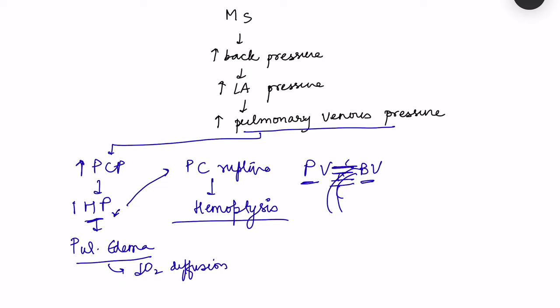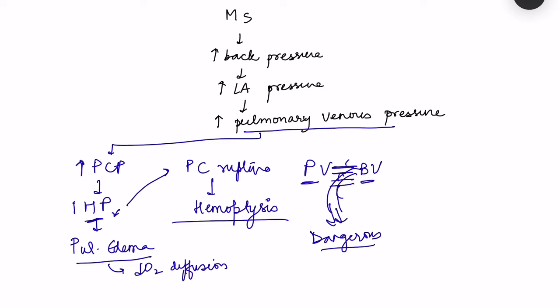Because this is a connection between pulmonary veins and bronchial veins, bronchial blood can come out. Since bronchial circulation is systemic circulation with very high pressure, a large amount of blood can escape, making this a very dangerous condition.